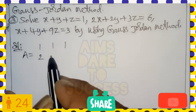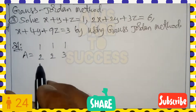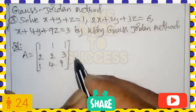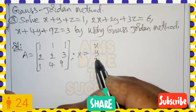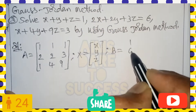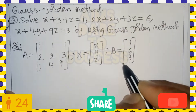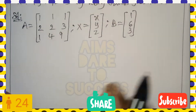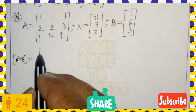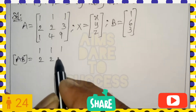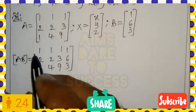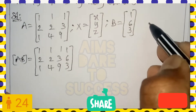First, we write the coefficient matrix A from the three equations: row one is [1, 1, 1], row two is [2, 2, 3], and row three is [1, 4, 9]. The variable matrix x is [x, y, z] column-wise, and the b matrix of right-hand side values is [1, 6, 3] column-wise. We combine A and b into one augmented matrix.